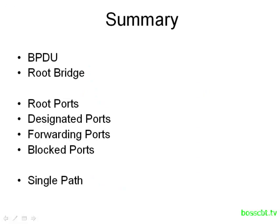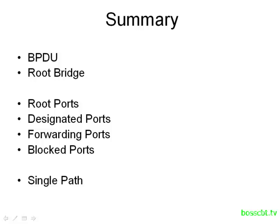To summarize what we covered: Spanning Tree uses BPDUs to communicate information between different switches. The first thing Spanning Tree will do is elect a root bridge. Then all of the non-root bridges will find their root port, which identifies the best path in the network to get to the root bridge. After that, each switch will see if it's connected to a shared network segment, and if it is, it will determine a designated port with the other switches connected to that segment. The designated port is simply the switch with the best path to the root, and it is responsible for sending and receiving frames — the only one allowed to do that for that particular segment. Designated ports and root ports are forwarding ports, meaning they actively transmit production traffic.